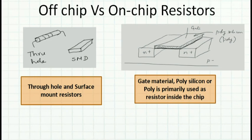Let's now look into off-chip and on-chip resistors. We are familiar with the off-chip through-hole component, and on PCBs we have surface mounted resistors or surface mounted devices. When it comes to an on-chip resistor, the resistance is formed by the gate material of the transistor, which is called poly silicon, also known as poly.